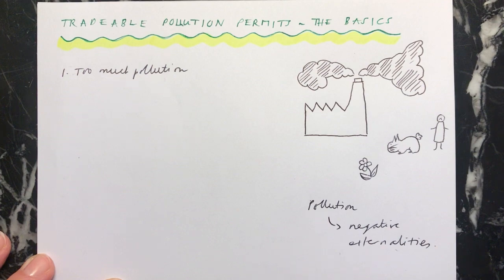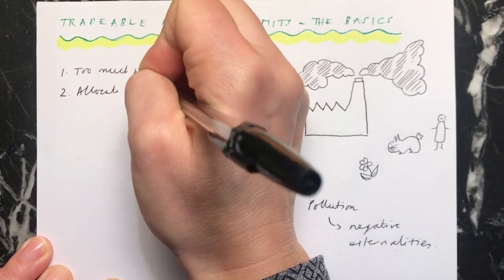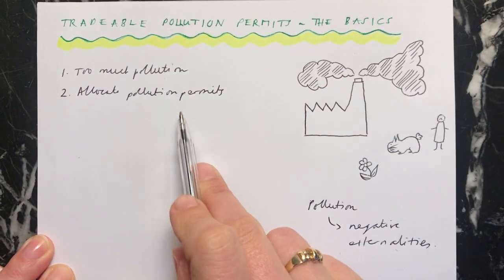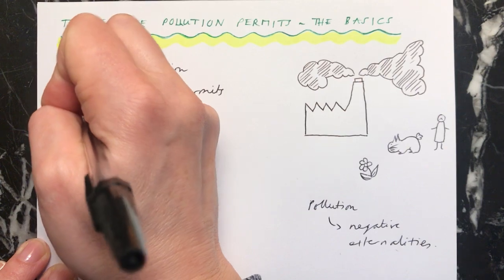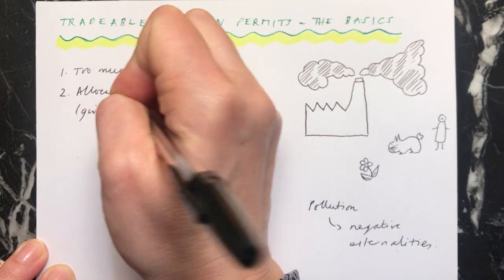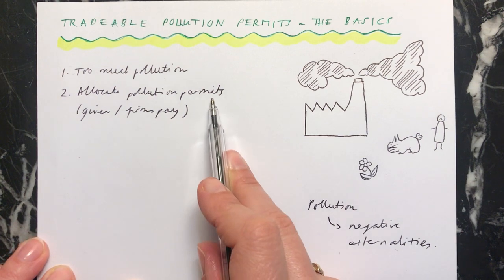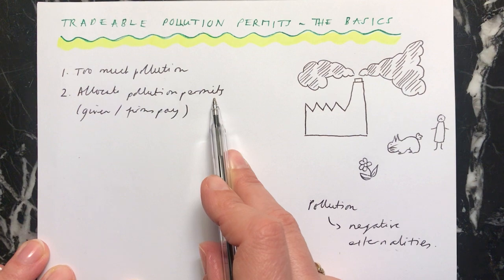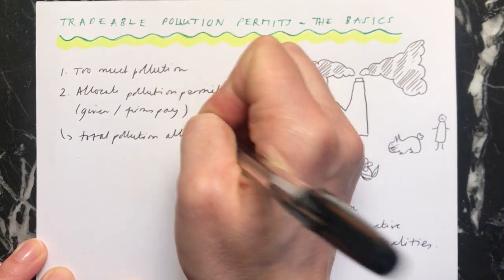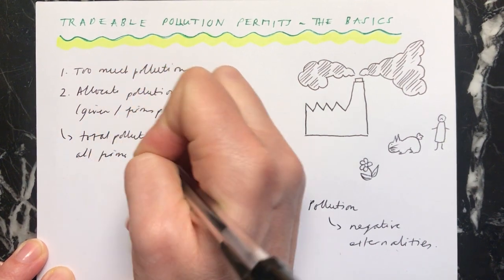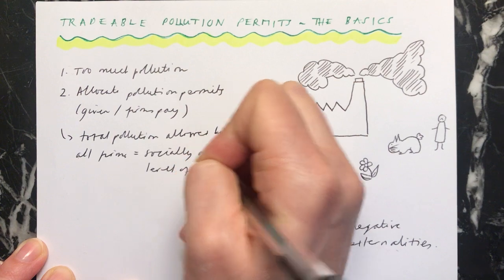So when they've established that there's too much pollution, what they then need to do is allocate pollution permits to industry. These permits give the firms the right to pollute up to a certain amount. These are sometimes given, or sometimes firms must pay for these permits, or pay for part of the permit. When they receive the permit, it means they're allowed to pollute a certain amount every year. The idea is that the total pollution allowed by all firms should equal the socially optimum level of output for that product.